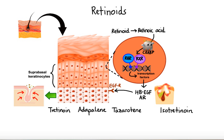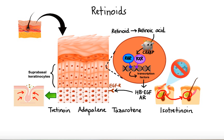Isotretinoin inhibits the proliferation and differentiation of sebum-producing cells, thereby shrinking the sebaceous glands and decreasing sebum production. In addition, oral isotretinoin also reduces colonization with P-acnes and the number of leukocytes that aggregate at the inflamed site, thereby reducing the number of infected and inflamed comedones. When it comes to side effects, topical agents are known to cause skin dryness, irritation, redness, swelling, blistering, and sensitivity to sunlight.